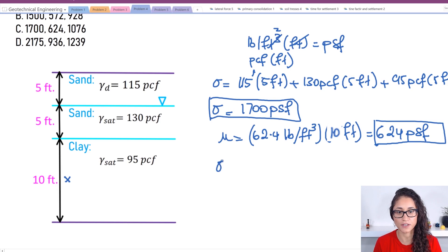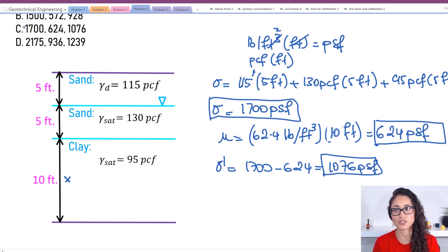Lastly, to calculate the effective stress, it's just going to be 1700 minus 624, which equals to 1076 PSF. So your answer is C.